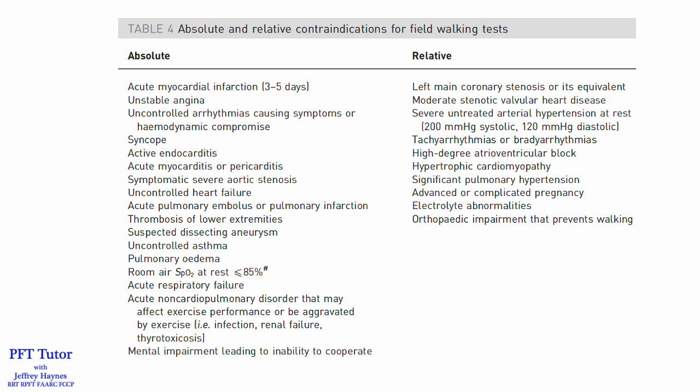Before reviewing the proper way to perform the test, it's important to identify patients who may not be good candidates. The ERS-ATS standards list absolute and relative contraindications. Absolute contraindications include recent myocardial infarction, pulmonary embolism, unstable cardiovascular status, acute respiratory failure, uncontrolled asthma, syncope, resting SpO2 of 85% or less, and dementia where the patient is incapable of following directions. Relative contraindications include uncontrolled hypertension, arrhythmias, and orthopedic limitations affecting ability to walk.